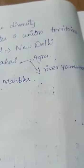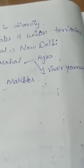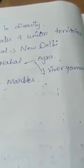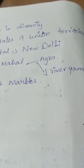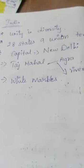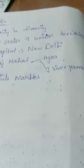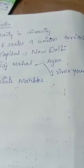India has 29 states and 9 union territories. The capital of India is New Delhi. India has several historical monuments — monuments means a place that remembers one person's life, history, and the importance of that period, especially from the kings' period.